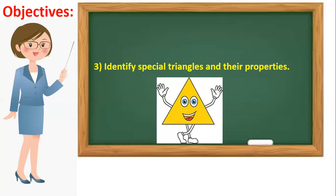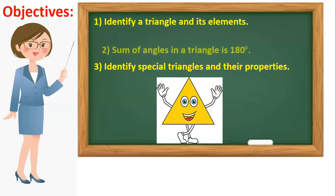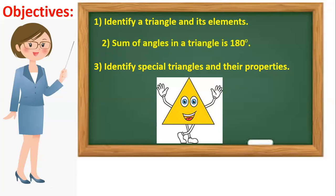The objectives of our lesson. Objective number 1: we will identify a triangle and its elements — what do we have in a triangle? Objective number 2: we will learn a very important thing, which is the sum of angles in a triangle is 180 degrees. Objective number 3: we will identify together special triangles and their properties, and learn the properties of each kind.